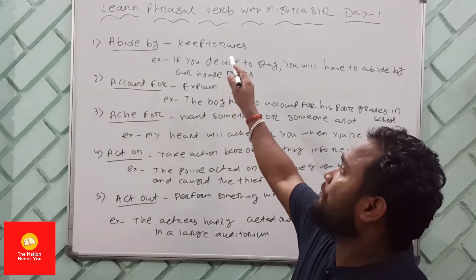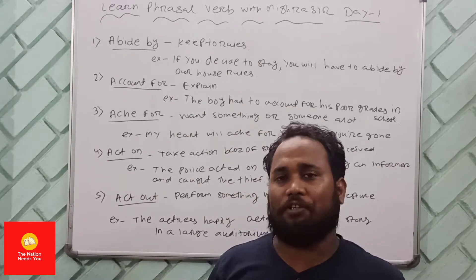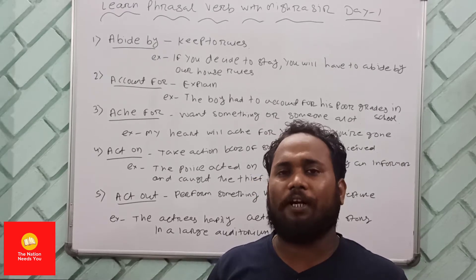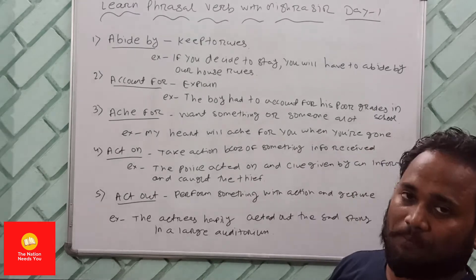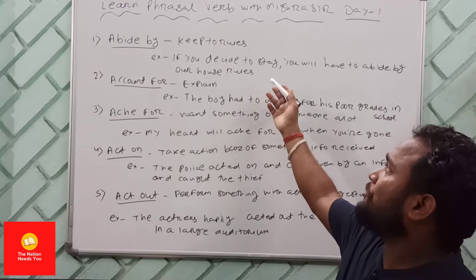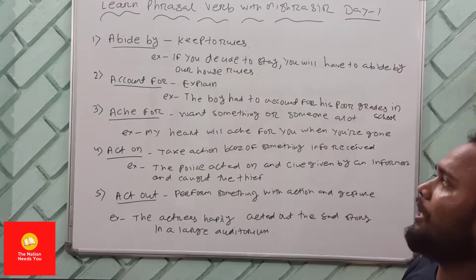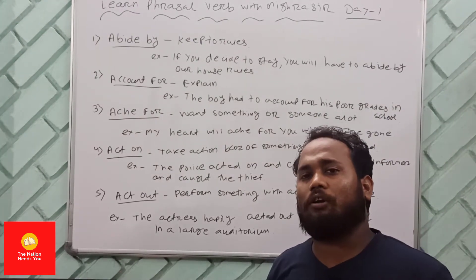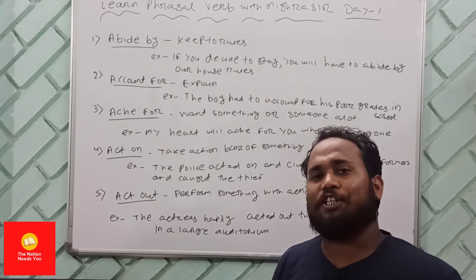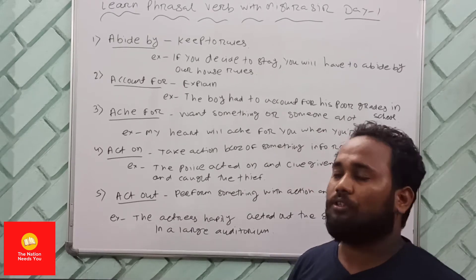The first phrasal verb is 'abide by,' which means to keep to rules. For example: In this situation, we must abide by the government COVID protocol. Or: If you decide to stay, you will have to abide by our house rules. In Bhubaneswar, when you are searching for a rental house, you must abide by the rules of that house.